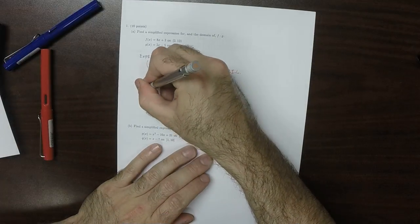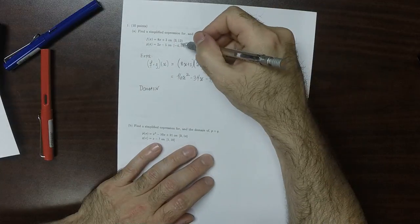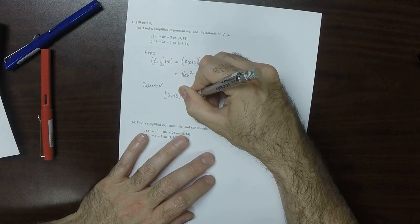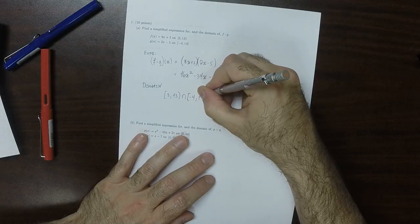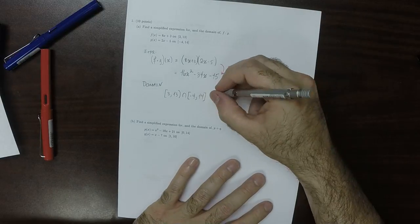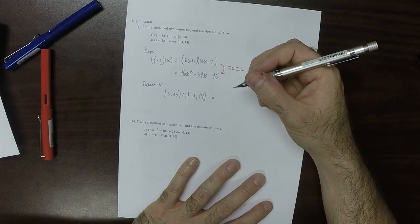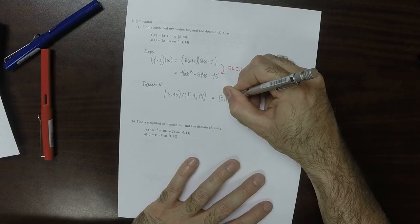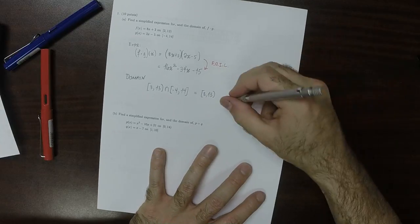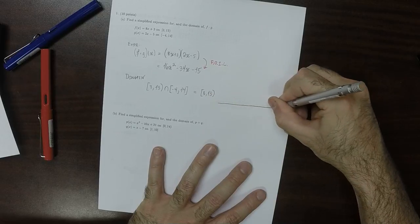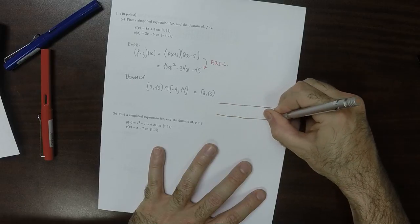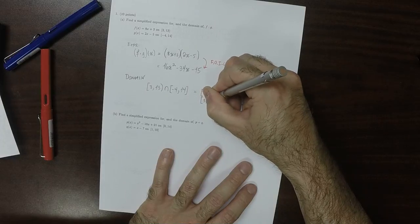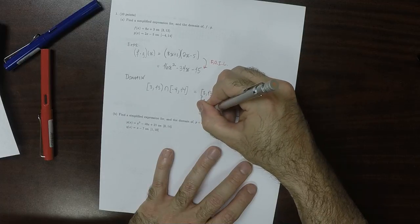And then for the domain, the domain is going to be the intersection of the individual domains. So that's [3,13) and then intersect [-4,14), like so. So that intersection is actually [3,13). So to see that, to see why that's the case, we could plot both domains. So we'll plot [3,13), and also [-4,14).